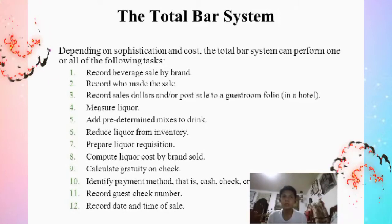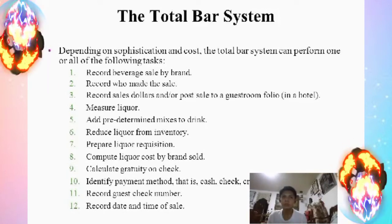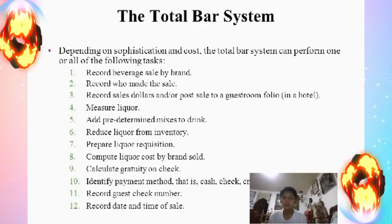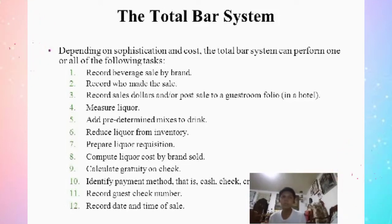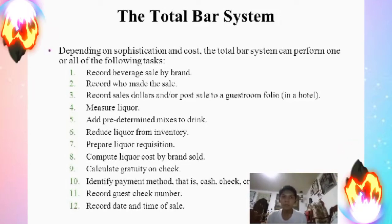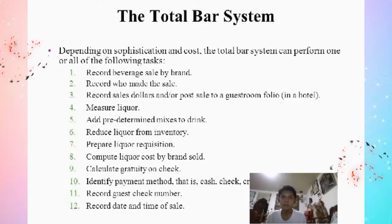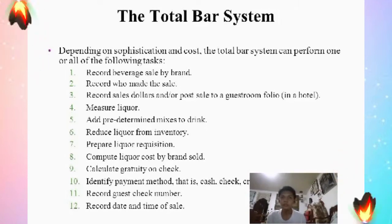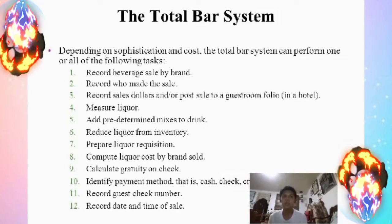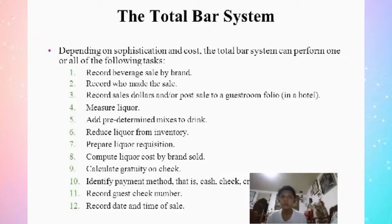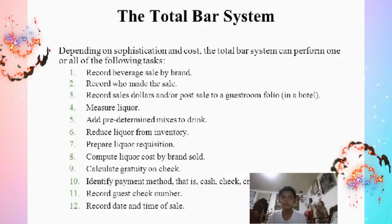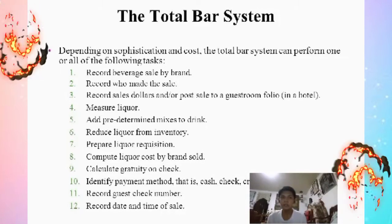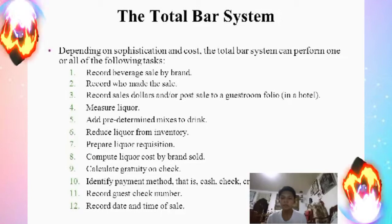Continuing the total bar system functions: ninth, calculate liquor cost per check; tenth, identify payment records such as cash, check, or credit cards; eleventh, record guest check number; and twelfth, record the date and time of sales.